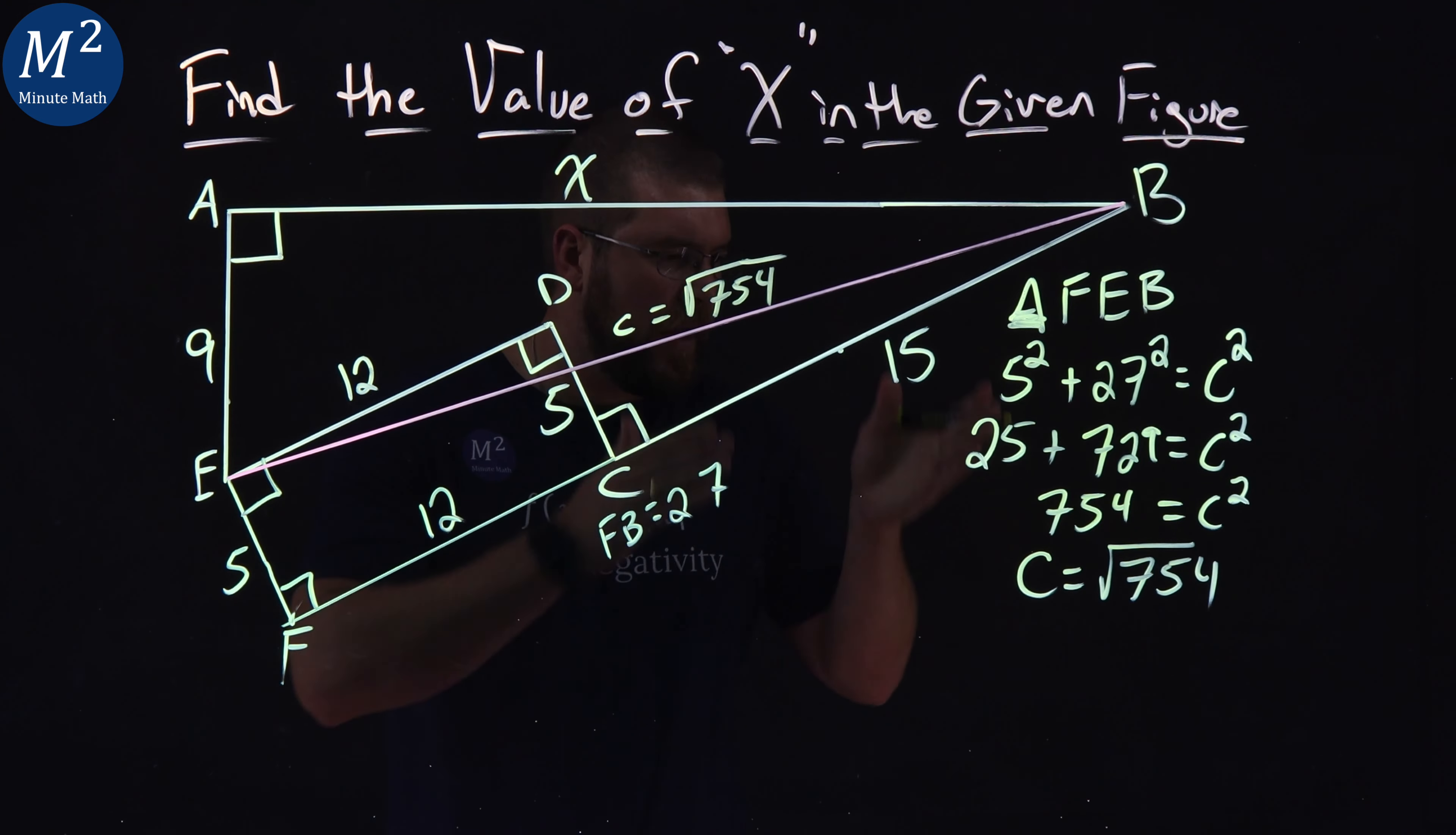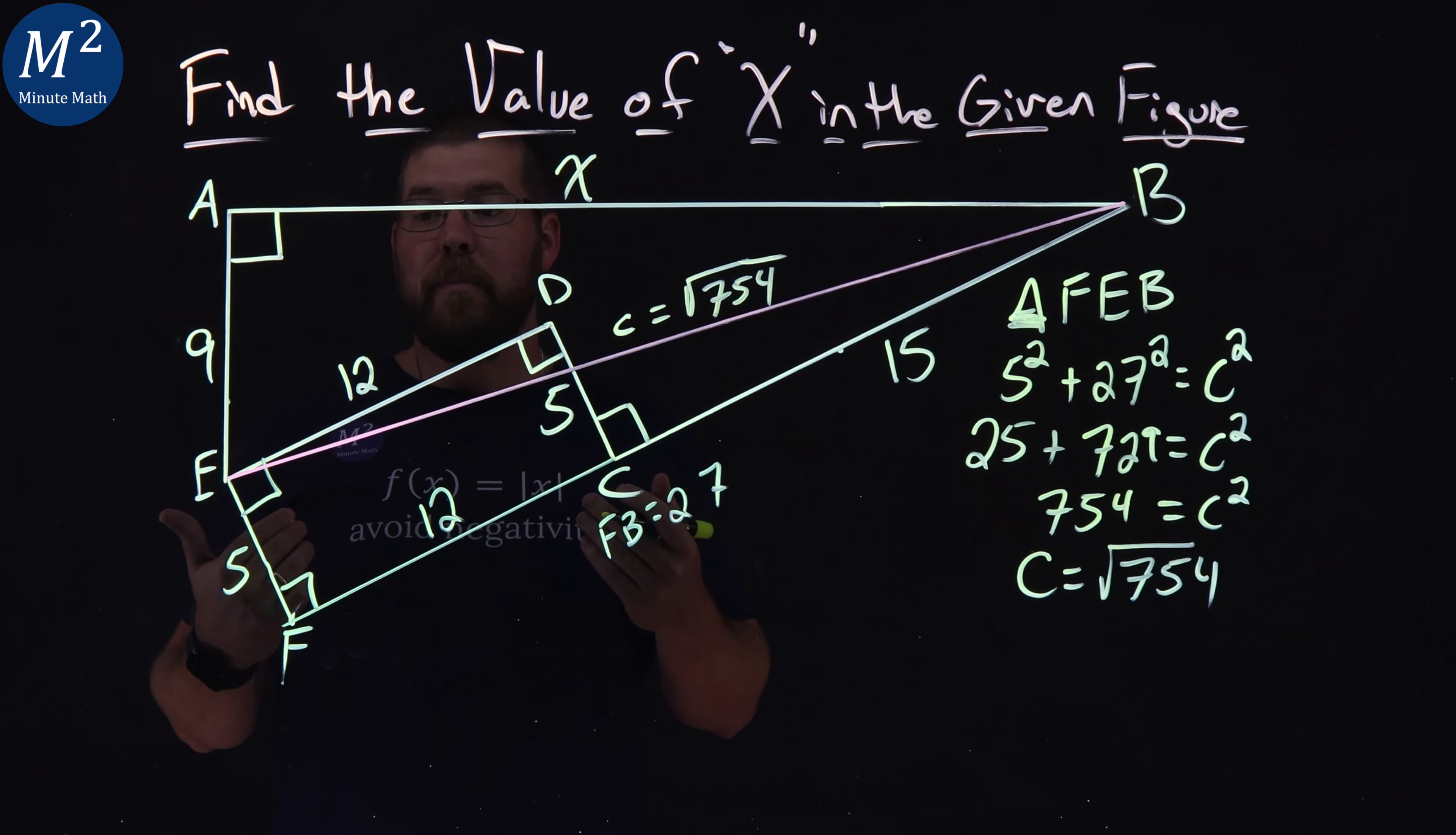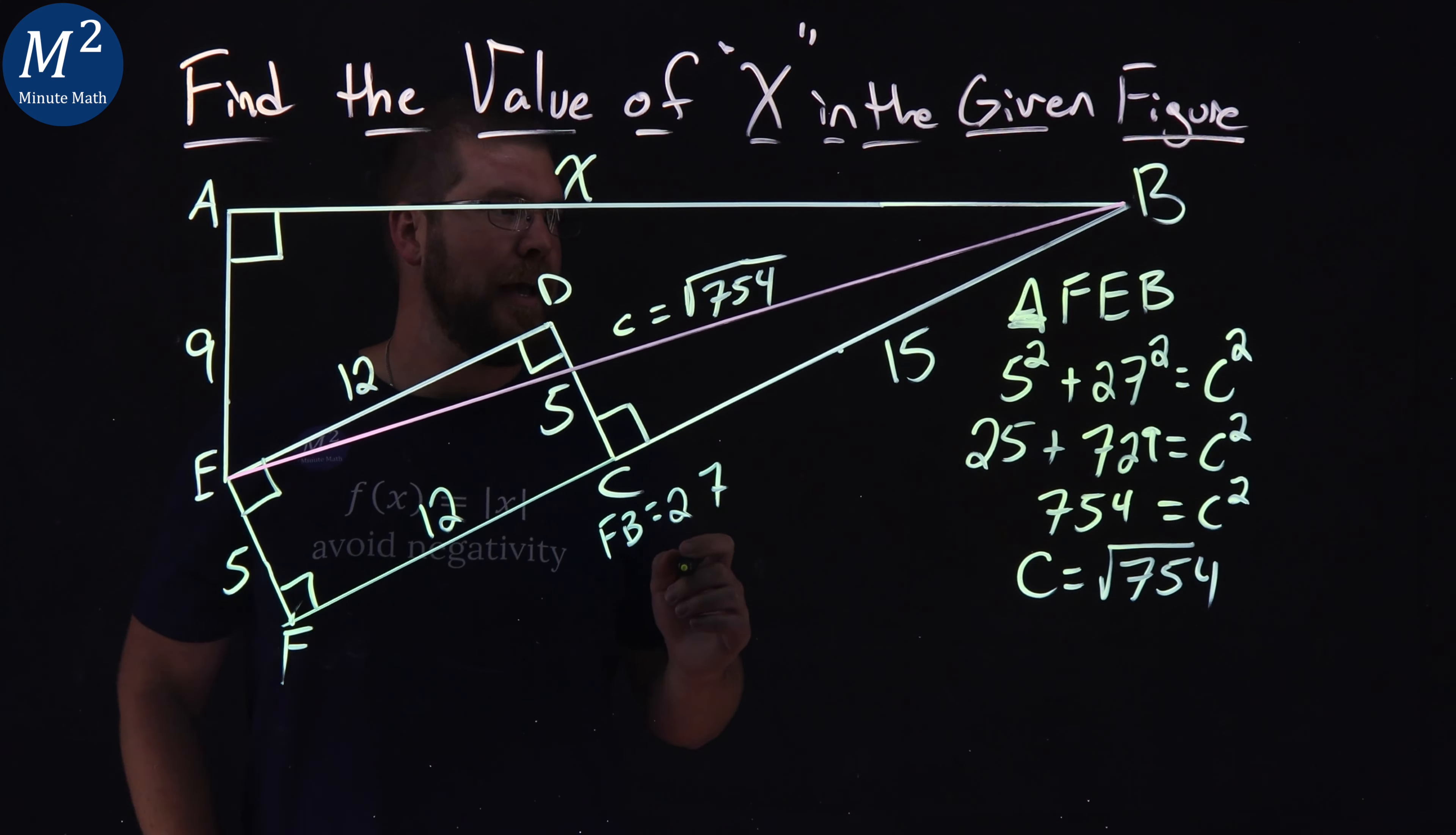Students do that all the time, they get all gung-ho and say we got to simplify it. No, no, no, we're going to do it again. Pythagorean theorem applies again. Look at this hypotenuse that we have, that C squared value, it's repeated again in one that has X that we need.